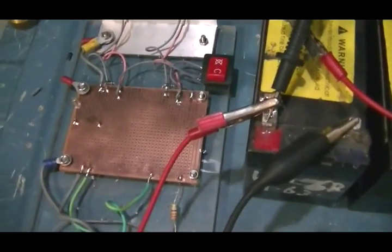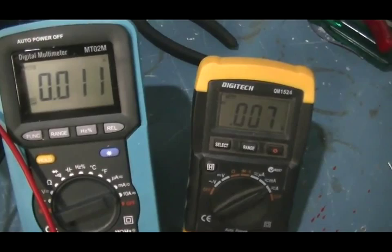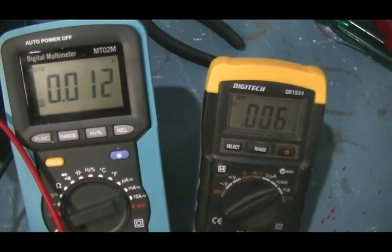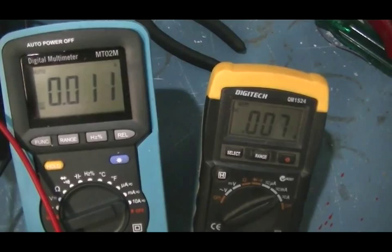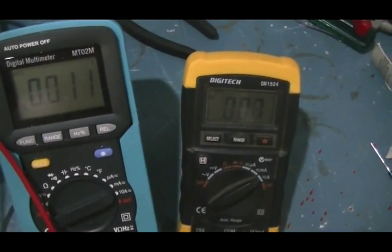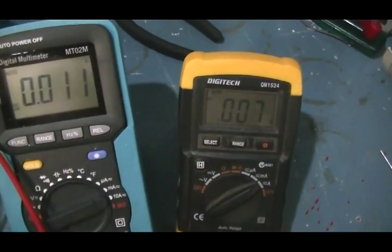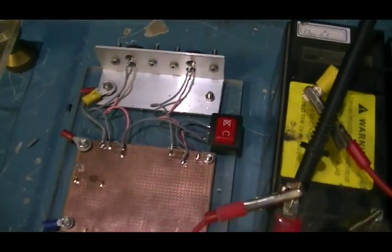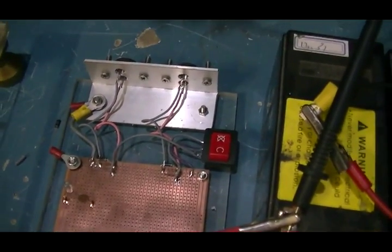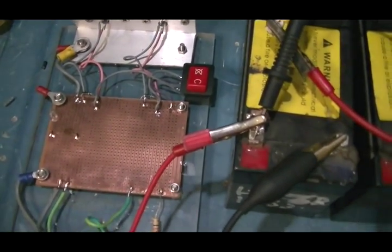By switching that button, we are now running on the 2N3055, which seems to draw a little more current but it also outputs a little more as well. So the two transistors are fairly close, but we'll keep it like that. It may change with different setups - one may be better than the other, and we'll see all that throughout our testing.